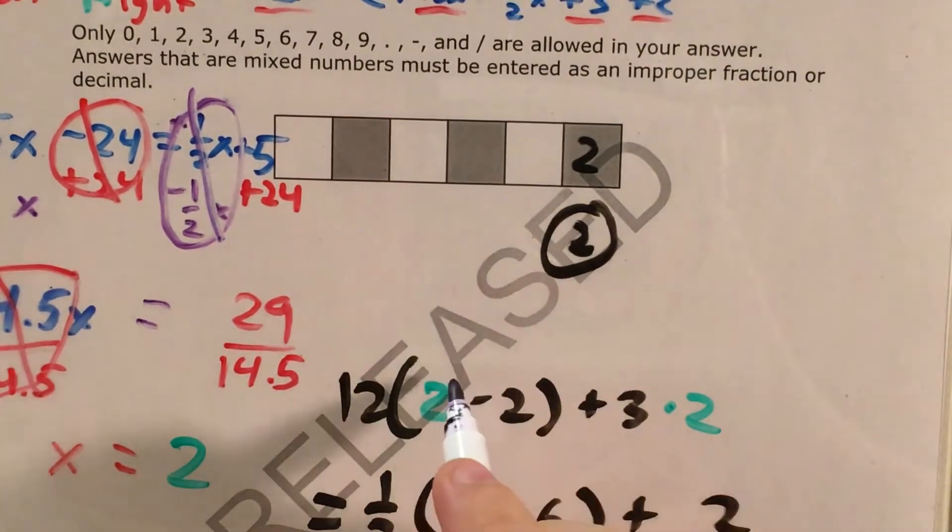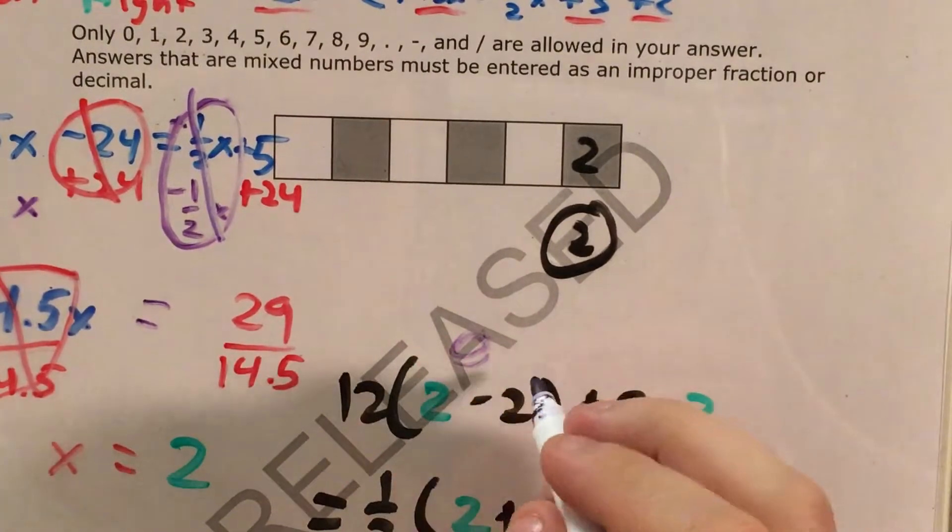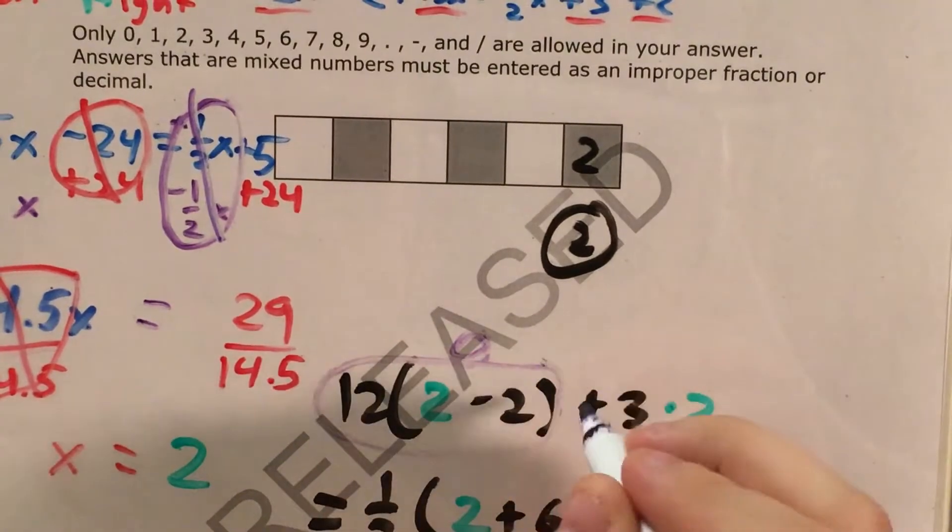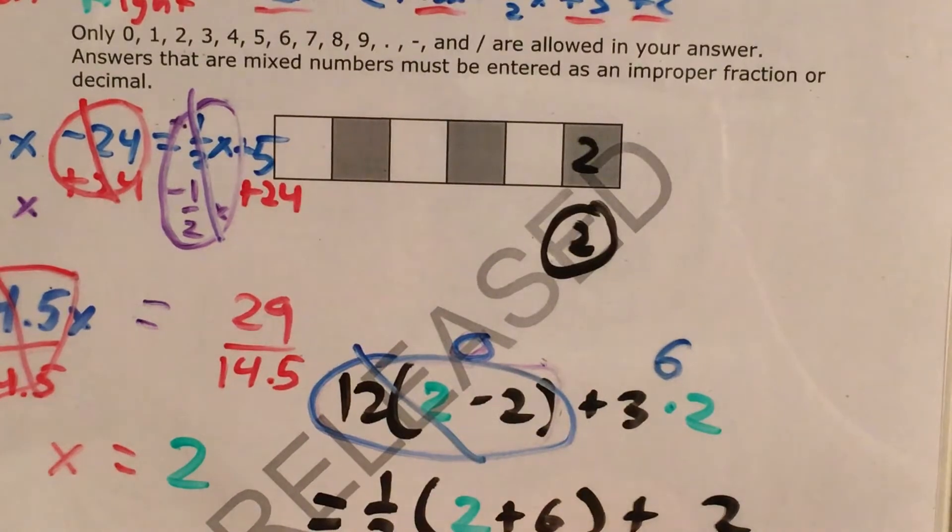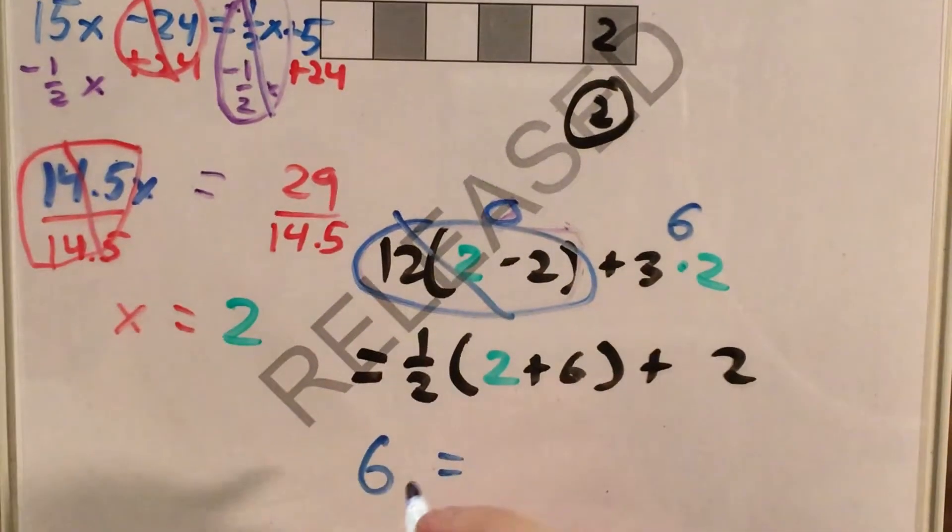So I can go ahead and use order of operations to figure out that 2 minus 2 is 0 and 12 times 0 just equals 0. So I don't need that. 3 times 2 is 6. So my entire left side of the equation is going to get me 6.